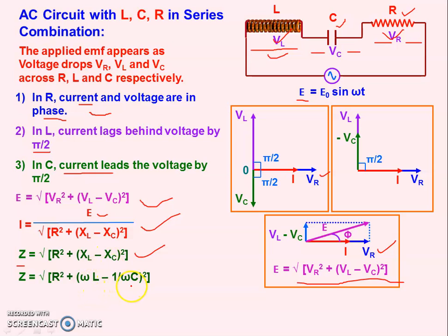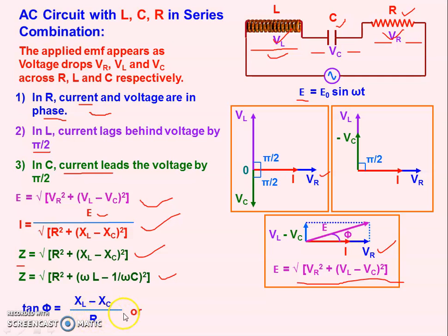To find the phase angle φ between EMF and current: tan φ = perpendicular / base = (VL - VC) / VR. Substituting VL = I·XL, VC = I·XC, VR = I·R, the I cancels out, giving tan φ = (XL - XC) / R. This is the phase angle formula for the LCR series circuit.